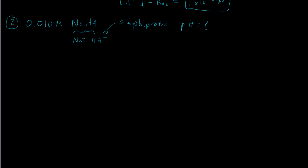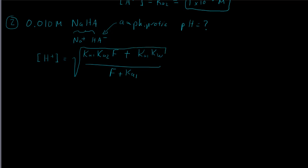For the amphiprotic species we have two formulas. The exact one from systematic treatment of equilibrium uses the square root of (Ka1·Ka2·F minus Ka1·Kw) divided by (F plus Ka1). Normally we use the approximation that pH equals one half of (pKa1 plus pKa2).